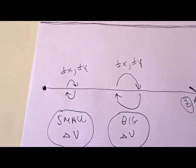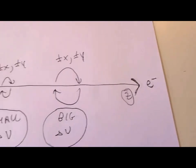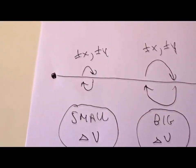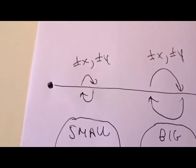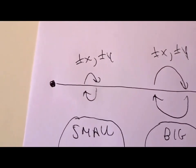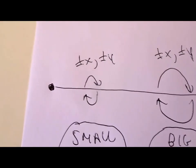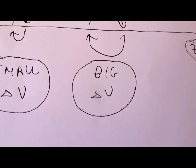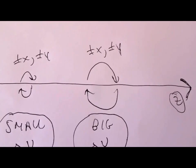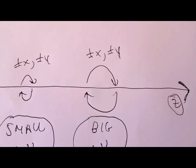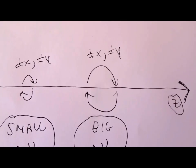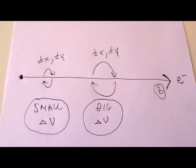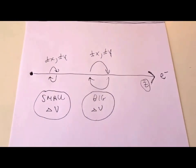Here's an electron moving sideways. If it has a small delta v, you see a small circular motion — plus or minus x, plus or minus y. If it has a big delta v, you see a big circular motion — plus or minus x, plus or minus y. And they all follow the right-hand rule. Everything is right-handed.